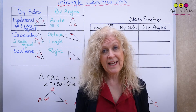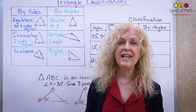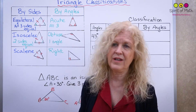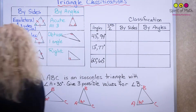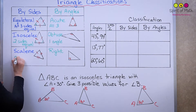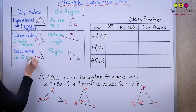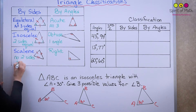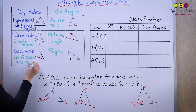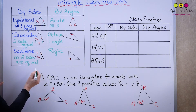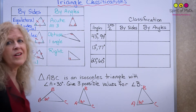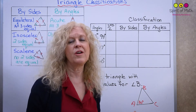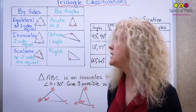Now we get to scalene. Scalene means no two sides are equal. I use one tick, two ticks, and three ticks to show all sides are different — and that means none of the angles are equal either.